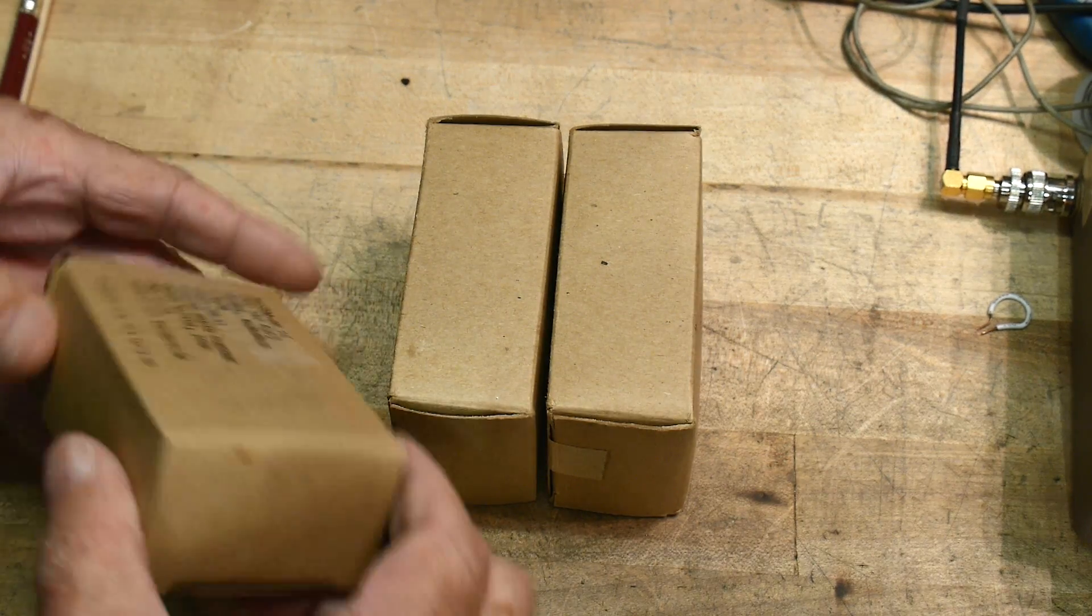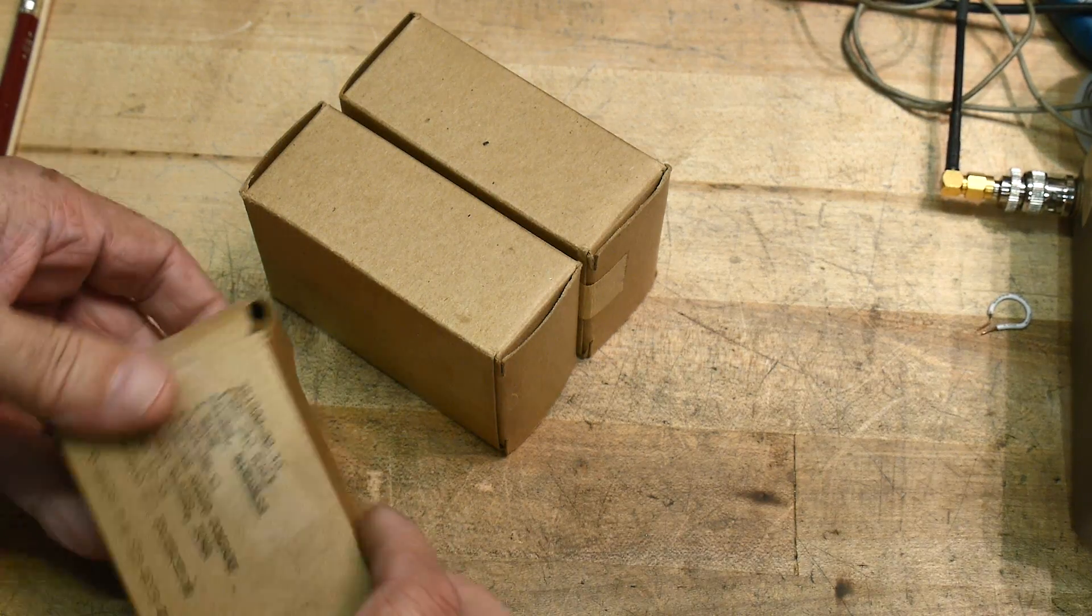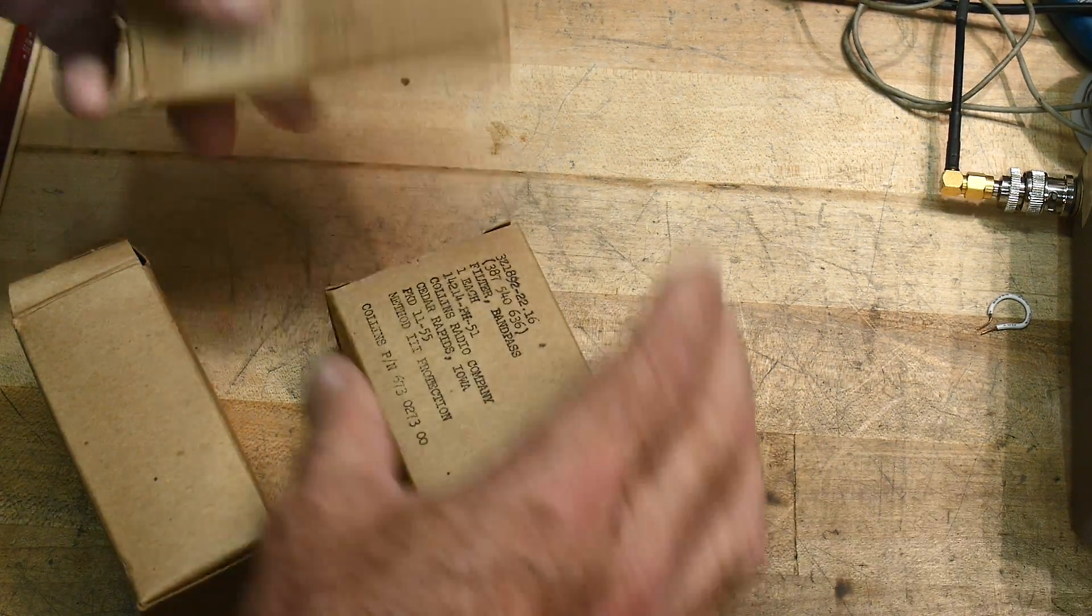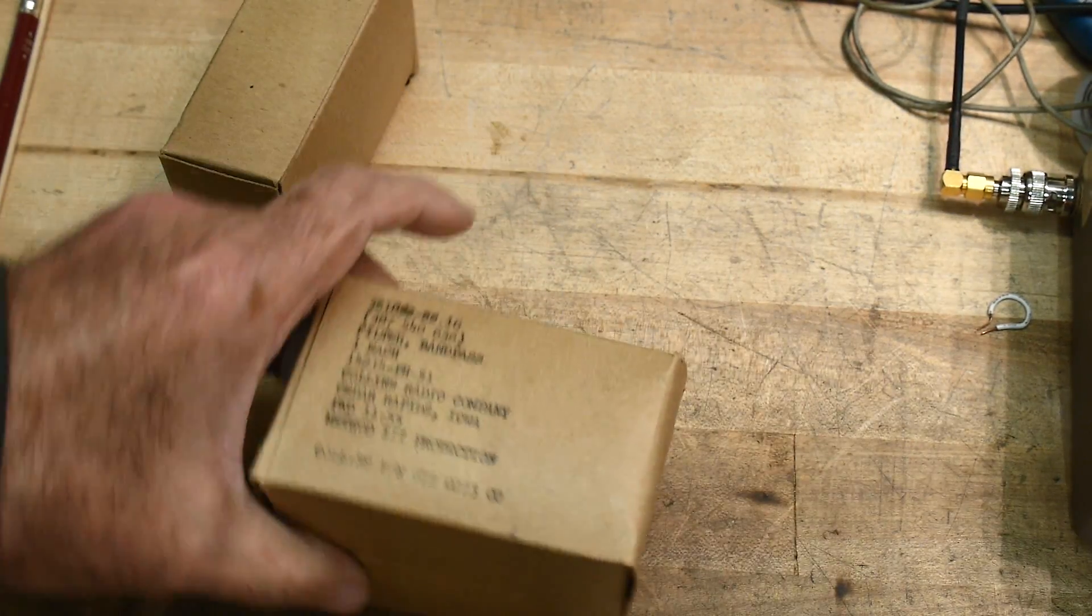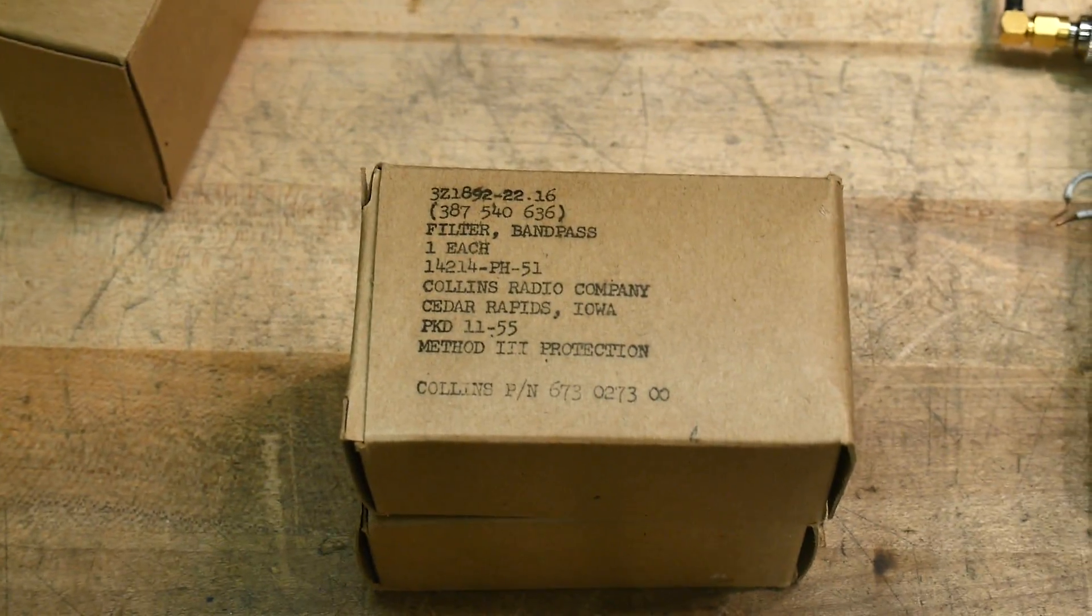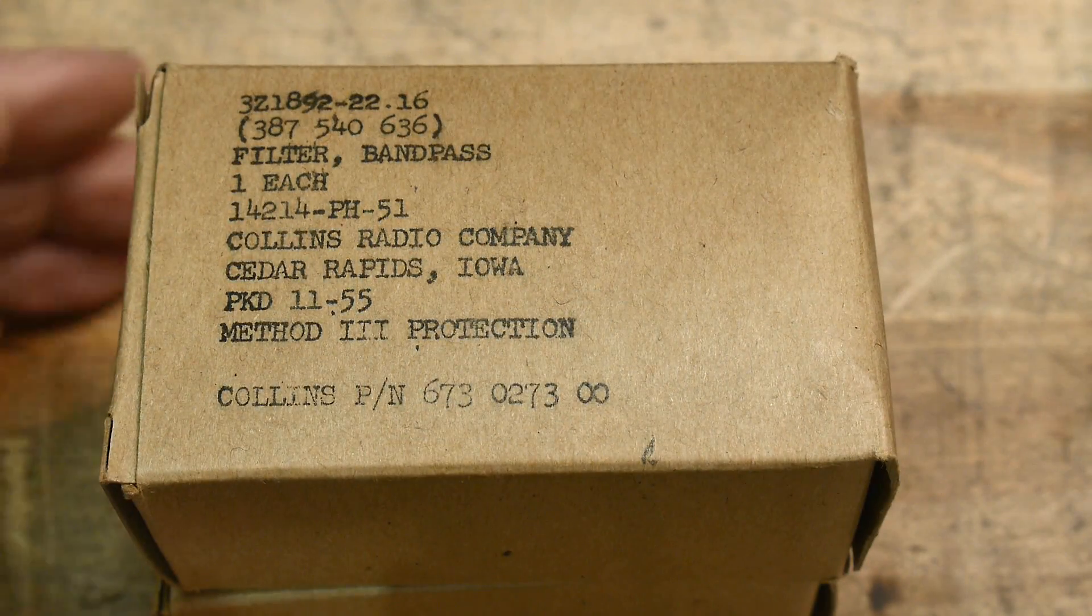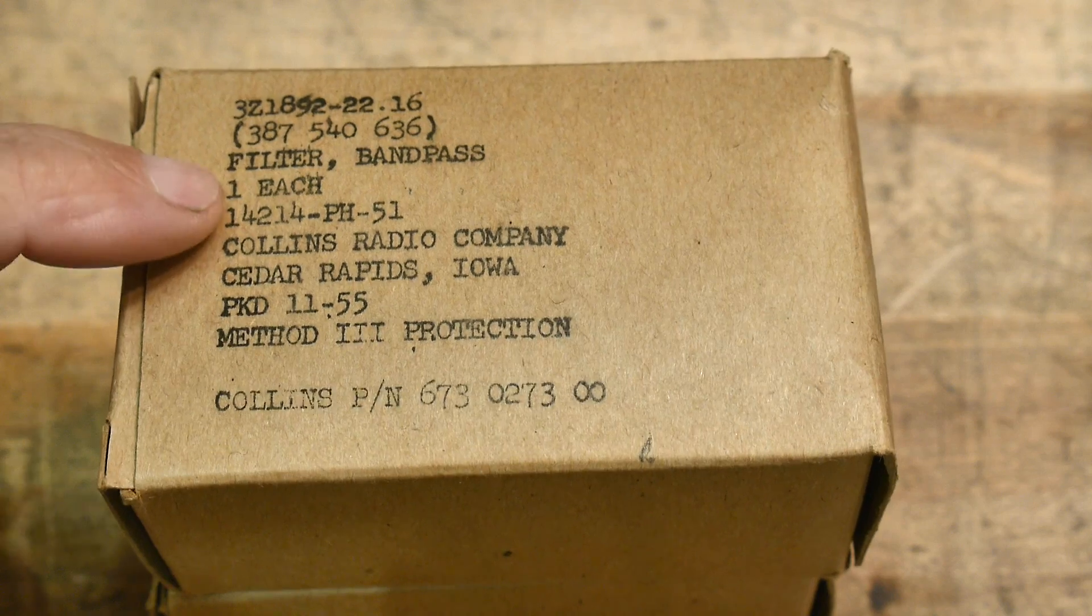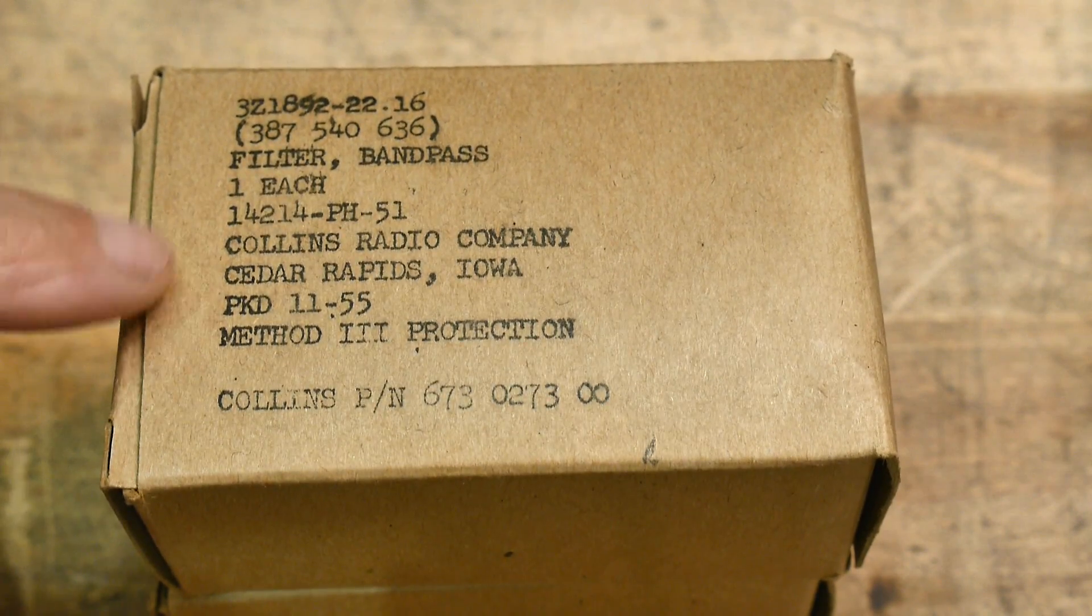And so this box looks like it may have been opened up once. The cool part is that these are new in the box. These are not pulled out of a radio. These aren't used. These are brand new in the box. Can you read that? Let me go down a little bit further. All right, filter, band pass, one each. Collins Radio Company, Cedar Rapids.